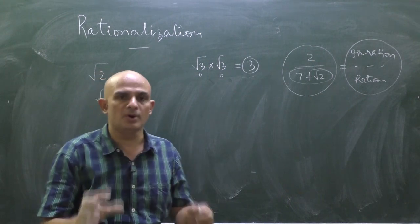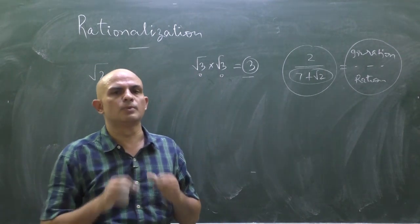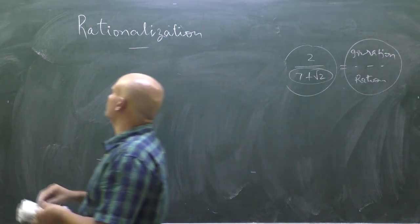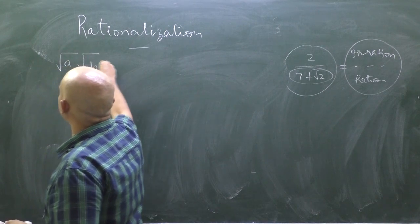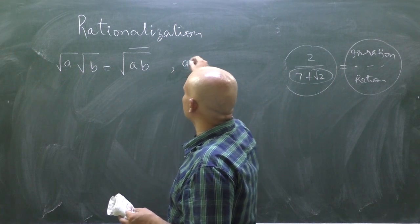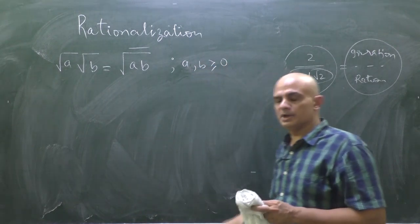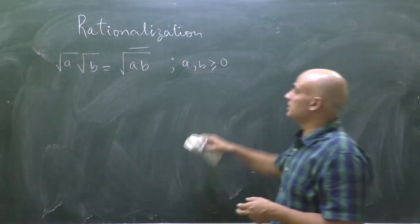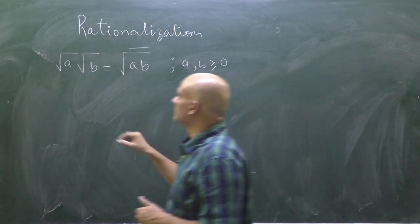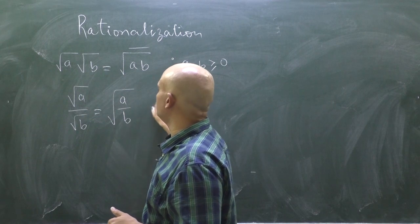To rationalize the denominator we should know some rules. Root a into root b equals the square root of a times b — but mind it, a and b must be greater than or equal to 0. Similarly, root over a upon root over b equals root over a by b, where b is not equal to 0 and a, b are both greater than 0.